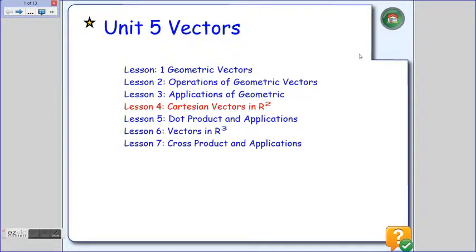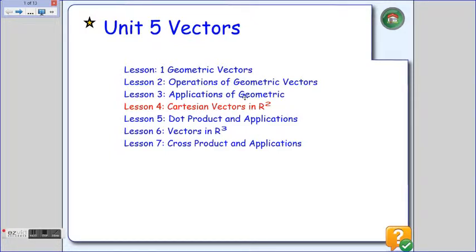Welcome to Unit 5, Lesson 4. Today we're going to start Cartesian vectors, and we're going to look at Cartesian vectors in R2 space. R2 represents two-dimensional vector space, and you'll see me referring to it as either R2 space or two dimensions — I'll use them interchangeably. Your textbook will use R2.